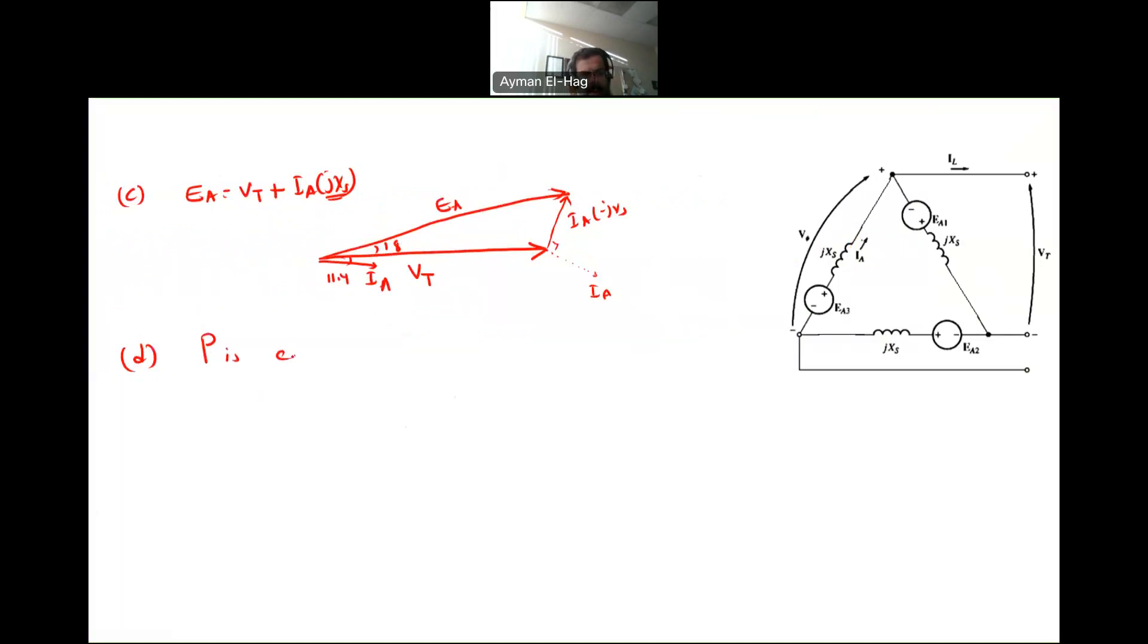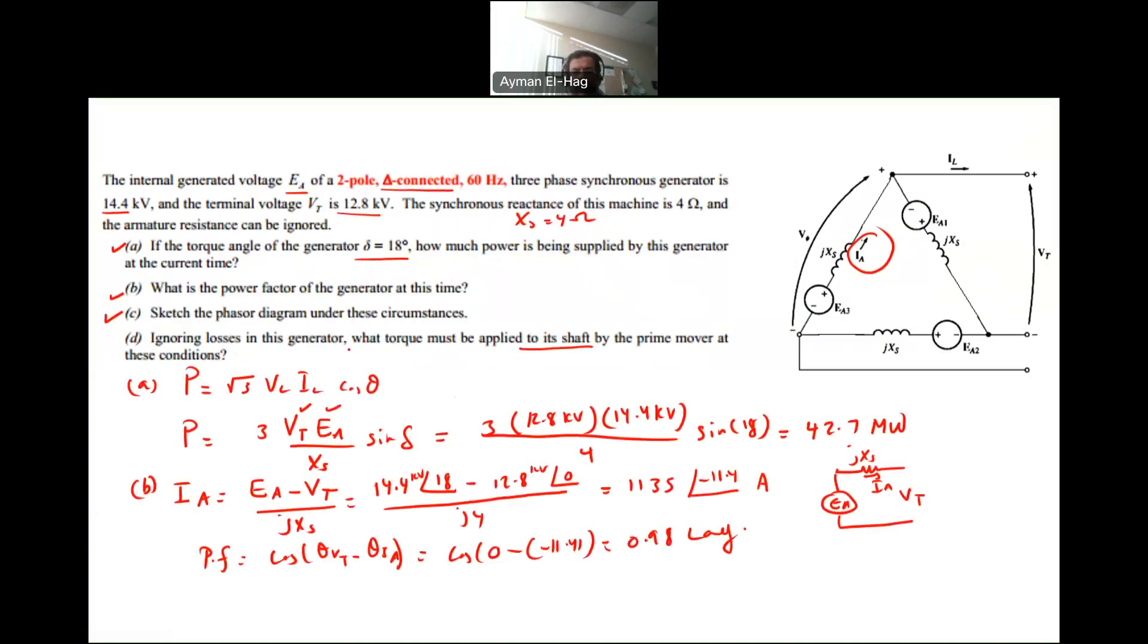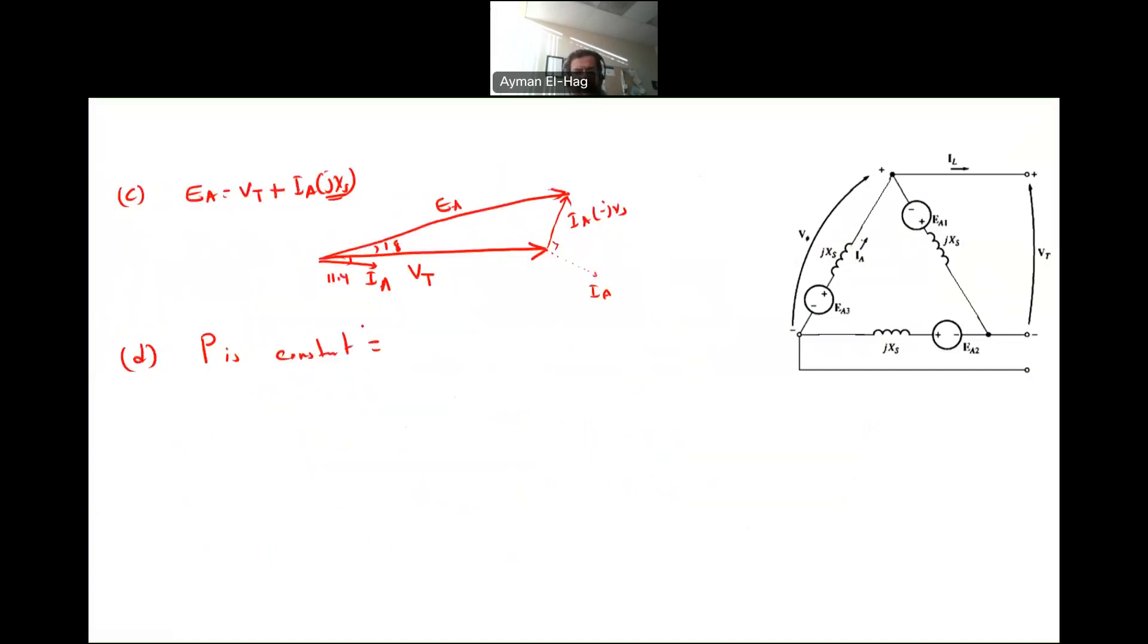P in, P out, all the power is constant because we are ignoring the losses, which is equal to the power that is being calculated as 42.7 megawatt. So we'll take this. The P is equal to the torque times omega M.